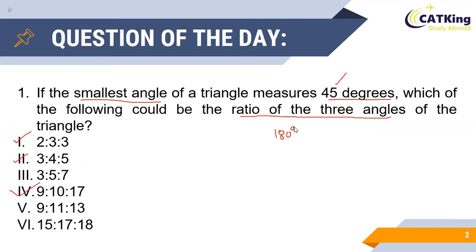Let us assume the ratio of three angles of a triangle as a:b:c such that a is always less than both b and c.